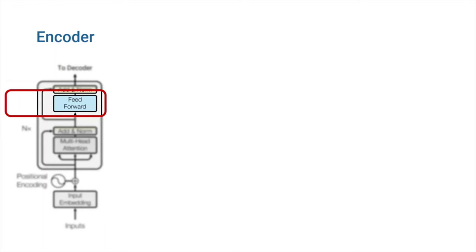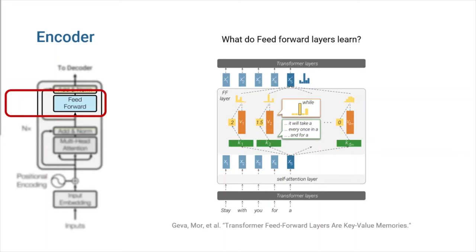In addition to attention sublayers, each of the layers in our encoder and decoder contains a fully connected feed-forward network, which is applied to each position separately and identically. This consists of two linear transformations with a ReLU activation in between. Its general role and purpose is to process the output from one attention layer in a way to better fit the input for the next attention layer. Gevo and colleagues gave this feed-forward network a more detailed look in their paper Transformer feed-forward layers are key value memories. They found out that the feed-forward networks in the transformer architecture tend to capture some linguistic patterns that might be one of the reasons of the transformer incredible performance in NLP tasks.